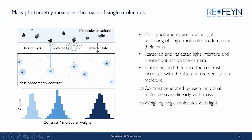More specifically, it is the interferometric analysis of the light scattered by molecules in solution that makes it possible to determine the mass. Three components contribute to image formation: light reflected from the glass-water interface, the light scattered by molecules in solution — whether a protein, lipid, or nucleic acid — and the interference between the scattered and reflected light. This interferometric signal is proportional to the mass of molecules, and every detected event is counted to generate a histogram giving a mass distribution of all biomolecules in solution.